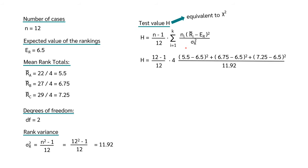In our case, the number of cases is 12 and we have 4 people per group, so we can factor out n_e. With mean ranks of 5.5 for group A, 6.75 for group B, and 7.25 for group C, this gives us a rounded H value of 0.5.